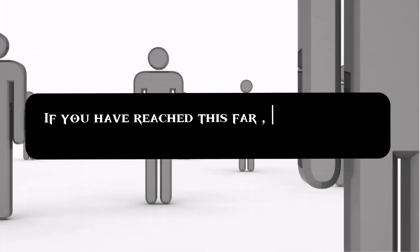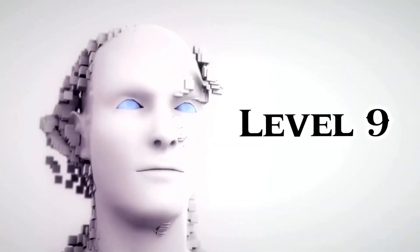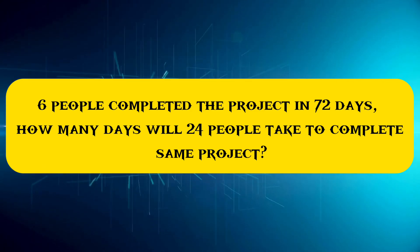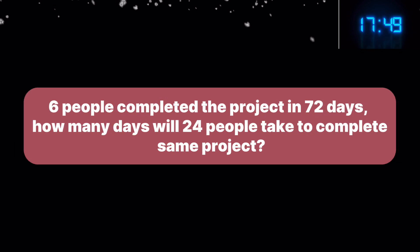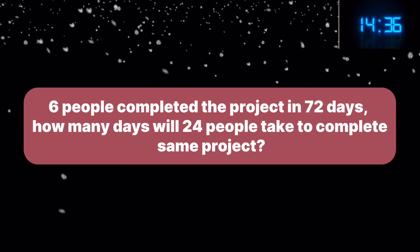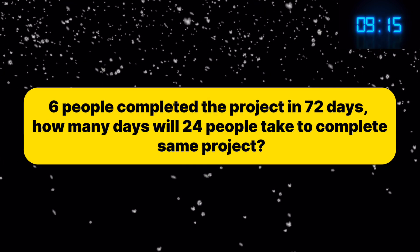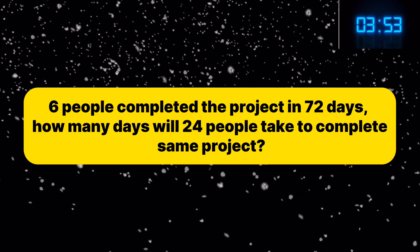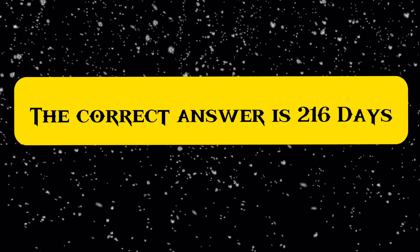If you have reached this far, you are now included in the top sharp minds of the world. Level 9: Six people completed the project in 72 days. How many days will 24 people take to complete the same project? Your time starts now. Hint: there is an inverse relation between men and days. Hurry up, time is running out. The correct answer is 18 days.